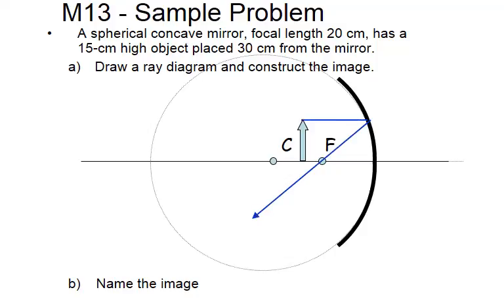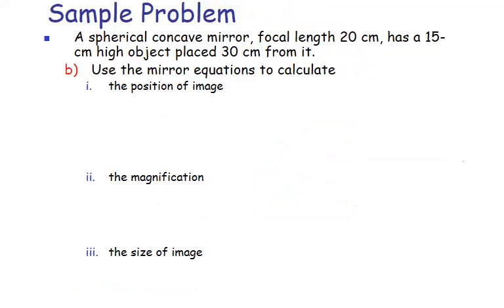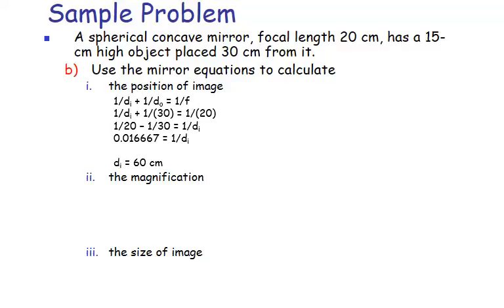Okay, so we have our parallel ray through the focus, focal ray, and our image shows up here. And that would be real, inverted, enlarged. And our DI should come out to be 60, it's located at 60 meters.